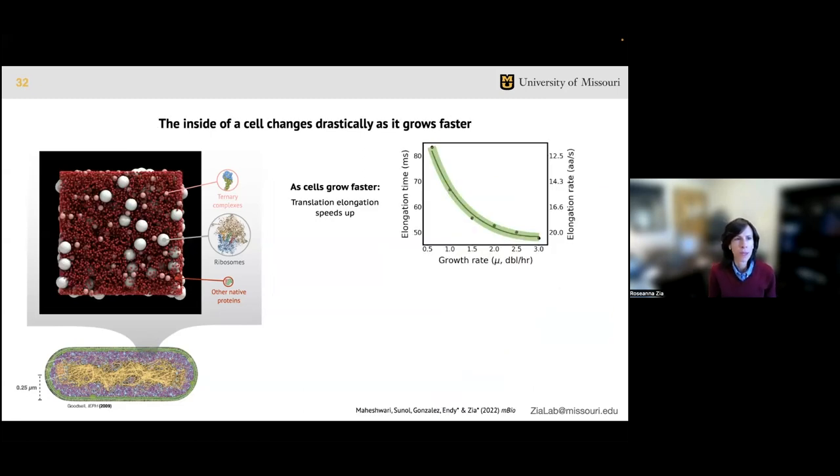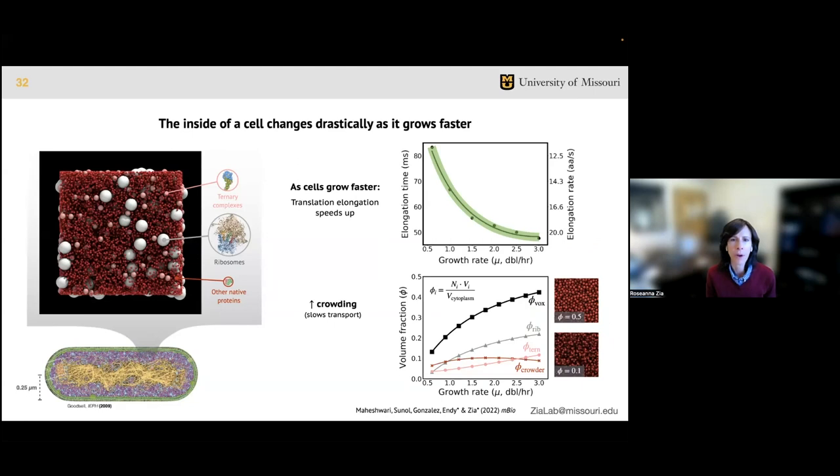From these concentration data, we found that the speed-up in translation with growth rate shown in green is accompanied by an increase in the cytoplasm volume fraction in black from 13 percent to 41 percent. This quantity describes how much of the volume is occupied by macromolecules. On the right, I'm showing simulation snapshots of a solution of single size colloids at 10 and 50 percent volume fraction to give some intuition on how crowded these suspensions are. We would expect this increase in crowding to slow transport at faster growth rates, and in fact that's what the literature has said previously. However, the concentration of ribosomes and ternary complexes outpaces that of native crowder proteins shown in red, meaning the relative stoichiometry of translation molecules improves at faster growth rates.